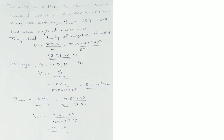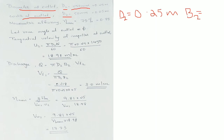The diameter at the outlet is D2, which is 250 mm. Converting to meters by dividing by 1000, D2 is 0.25 m. The width at outlet B2 is equal to 50 mm, which is equal to 0.05 meter.